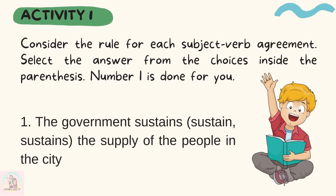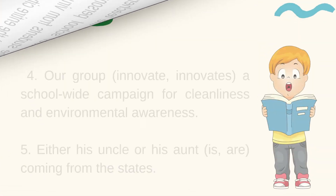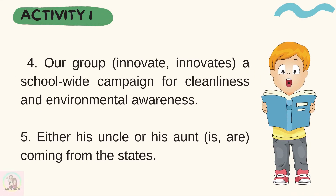Now for our activity, consider the rule for each subject-verb agreement and select the answer from the choices inside the parentheses. Number one is done for you. Number two: the duty of the teachers and other volunteer school personnel to protect the students from virus infection — help or helps — the entire city. Number three: people in the whole country — crowd or crowds — into the street to voice out their concerns. Number four: our group — innovate or innovates — a school-wide campaign for cleanliness and environmental awareness. Number five: either his uncle or his aunt — is or are — coming from the states.